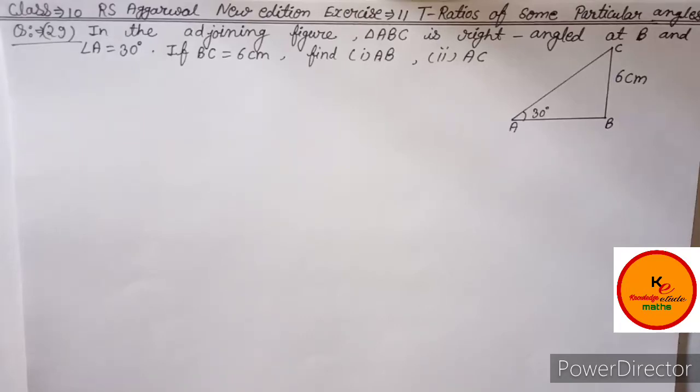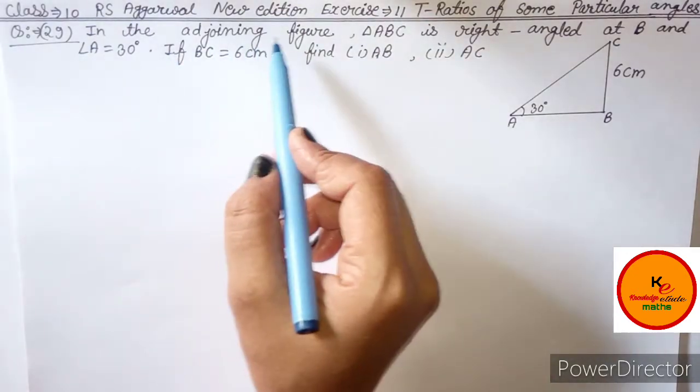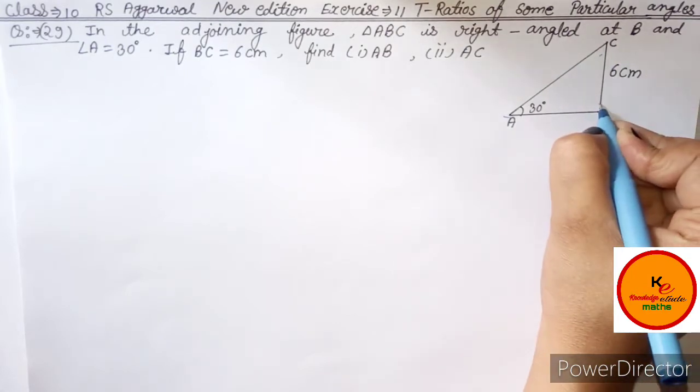Hello friends, welcome to my YouTube channel Knowledge Etude Maths. Class 10th RS Agrowal new edition Exercise 11, question number 29 is in front of you. In the adjoining figure, triangle ABC is right angle at B.